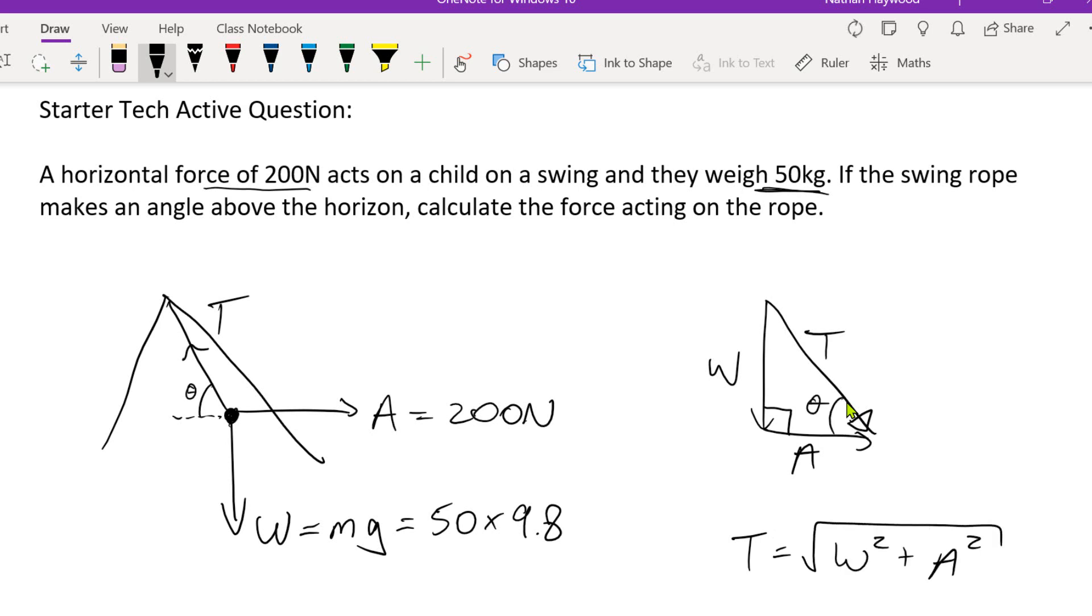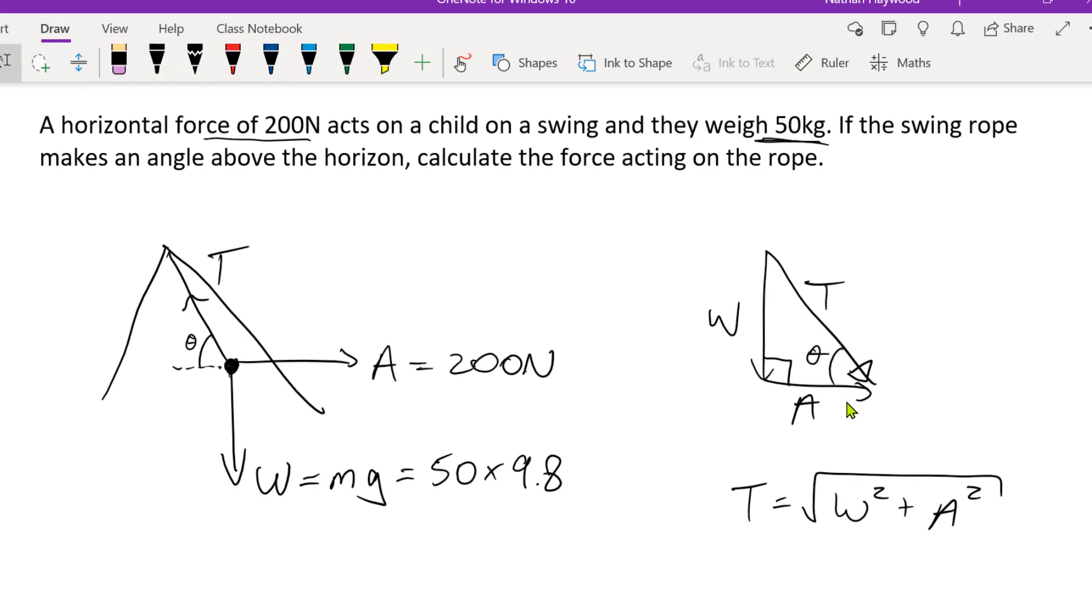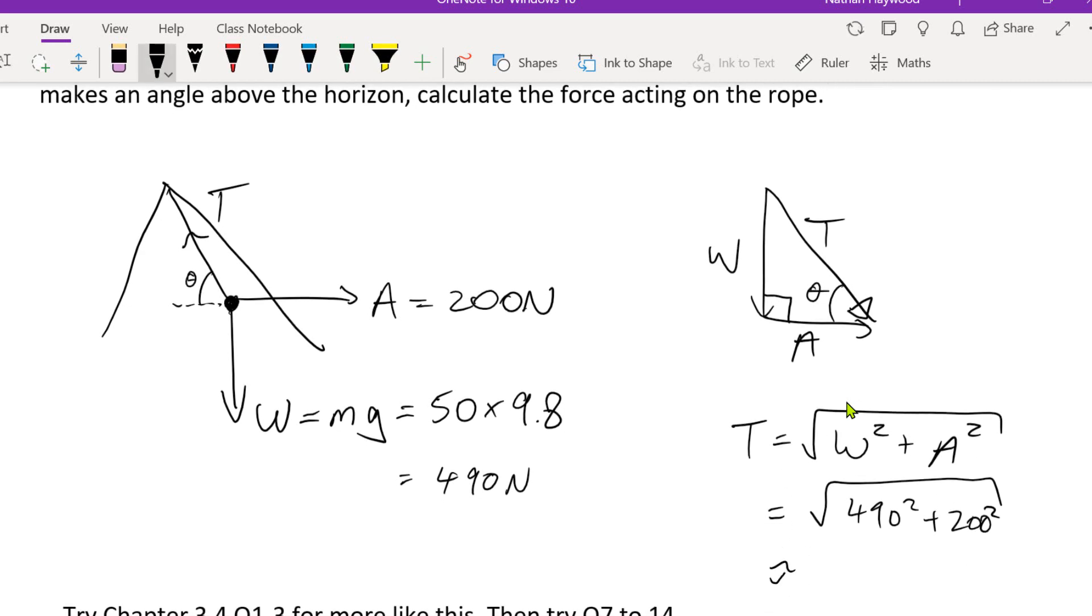Okay, I don't know why you needed to do that, but sure. And this is equal to 490 Newtons. So we've got 490 squared plus 200 squared, and that's approximately equal to...